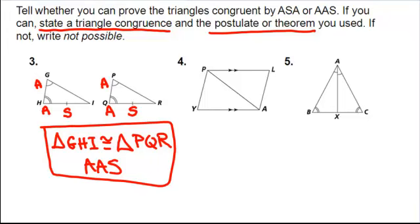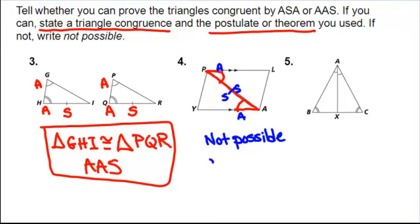For problem 4, there are no congruent markings — only markings for parallel sides shown as arrows. From the parallel lines I can mark vertical angles as congruent, giving one congruence. I might consider the common side, but I'm realizing I only get two marks — an angle and a side — and I cannot add any more information using only common sides or vertical angles. That's not enough, so this is not possible.